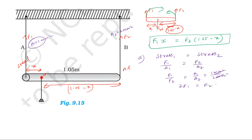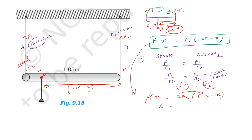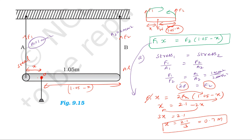Using the principle of moments, F1 into x equals F2 into (1.05 minus x). Substituting F1 equal to half of F2: we get x equal to 2 into 1.05, giving 2.1. So 2x plus x equals 2.1, meaning 3x equals 2.1, and x equals 2.1 divided by 3, which gives x equal to 0.7 meter. So the weight should be suspended 0.7 meter from the steel wire.